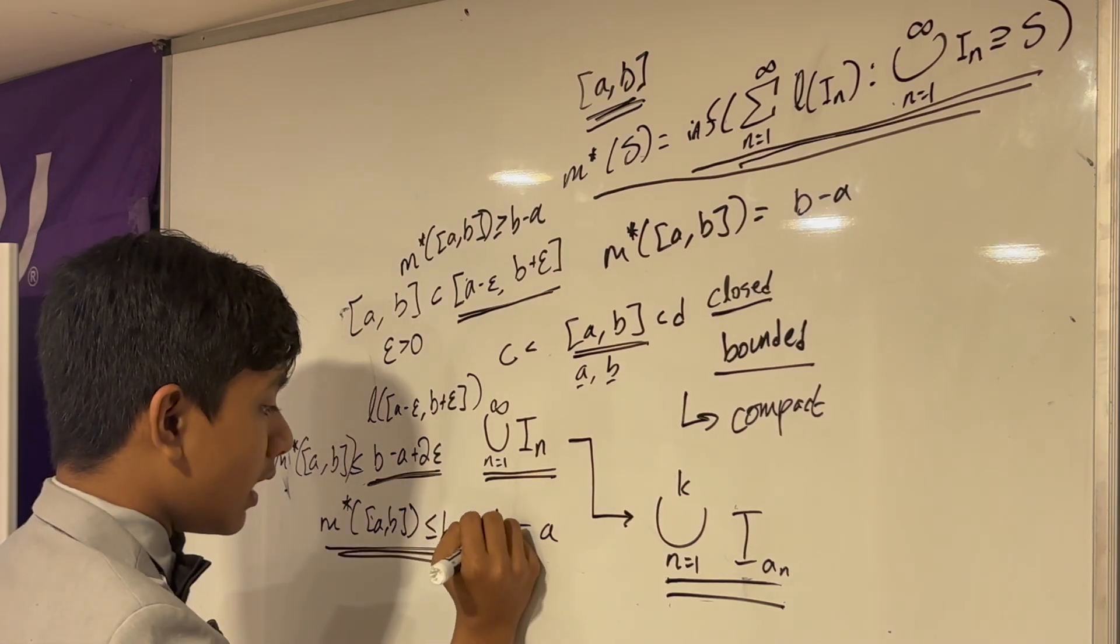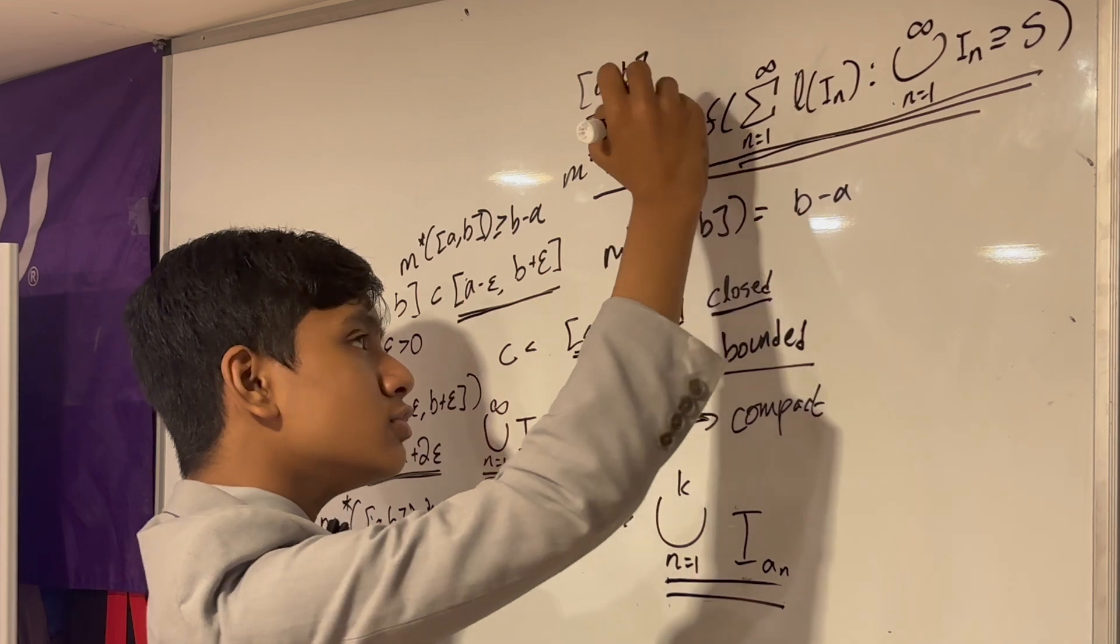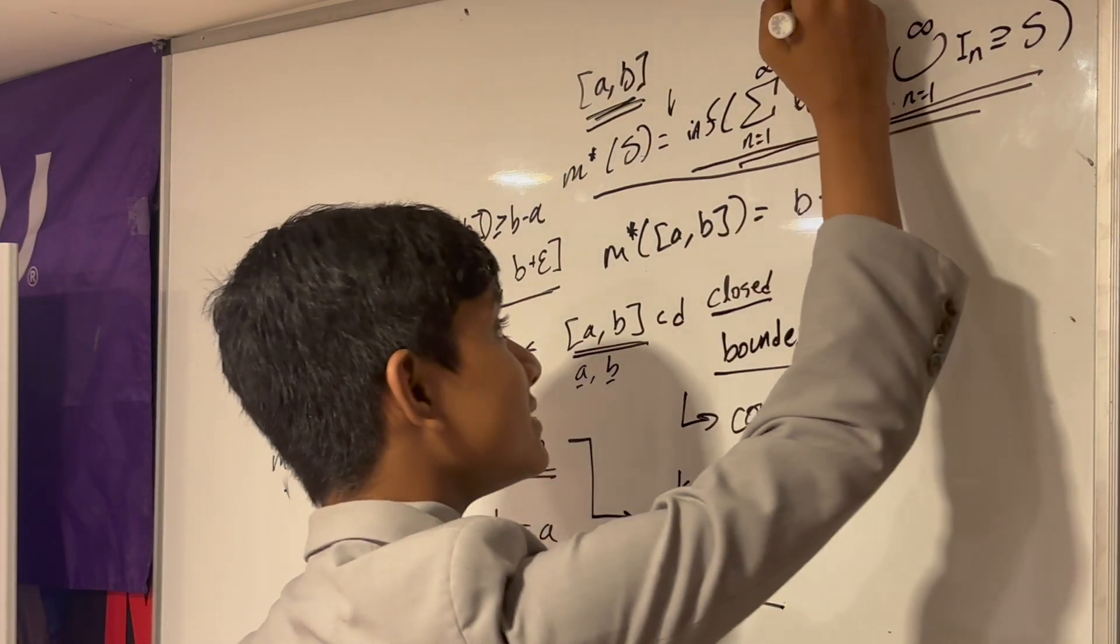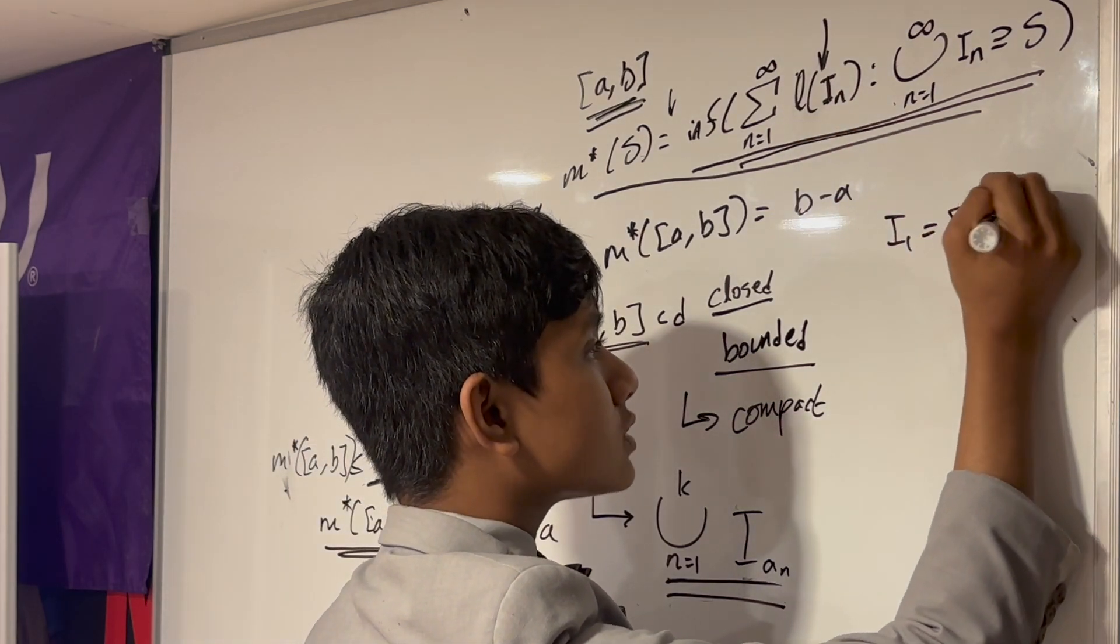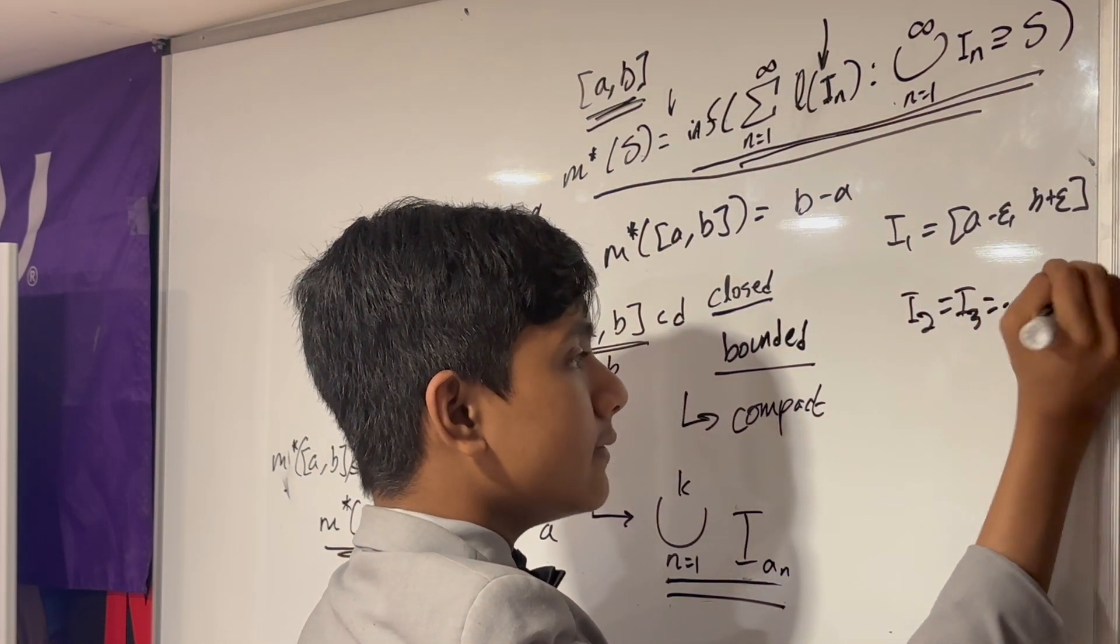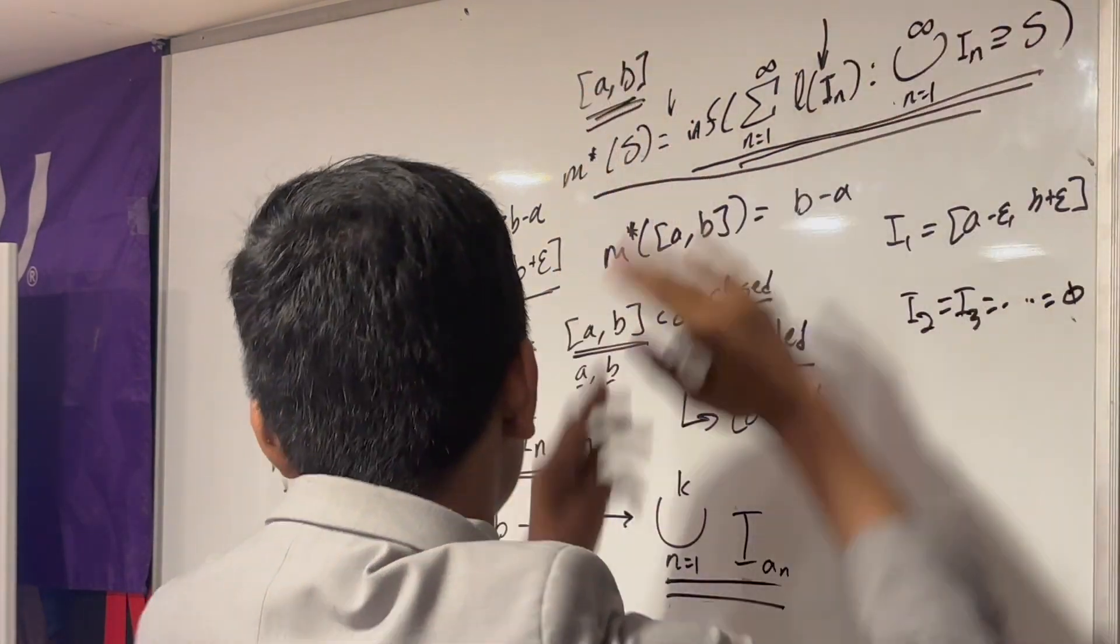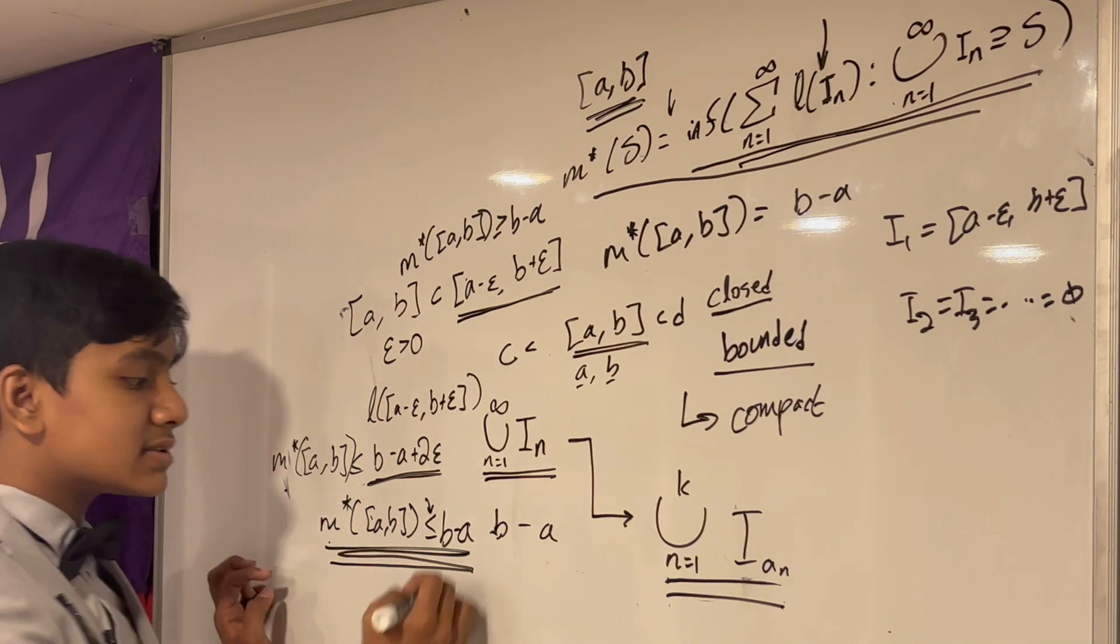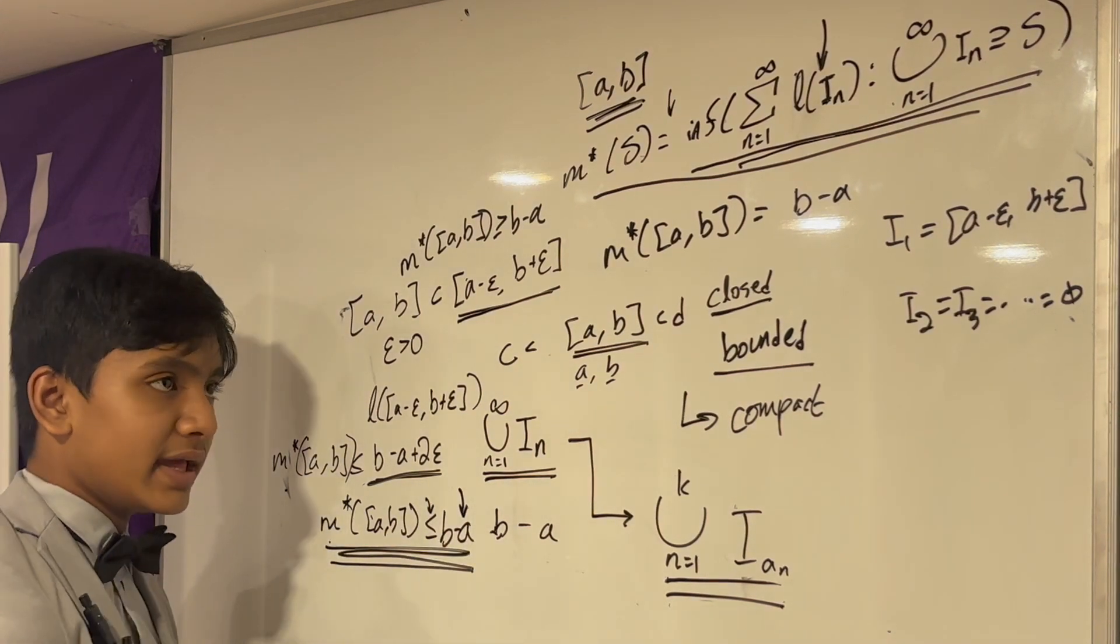Now, of course, why am I saying less than or equal to instead of just equal to? Well, because I don't actually know that this specific sequence, I_1 is equal to [A minus epsilon, B plus epsilon], I_2, I_3, dot dot dot, or empty—I'm not sure that this specific sequence will minimize this infimum. But, we already know that the infimum has to be something less than or equal to this. This is like an upper bound for the infimum.